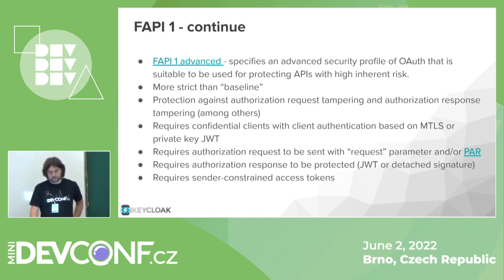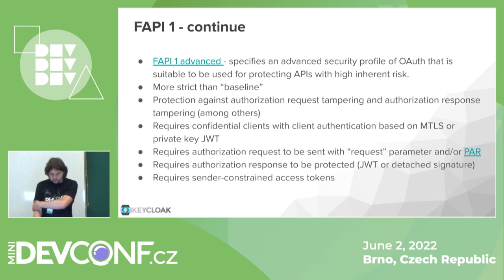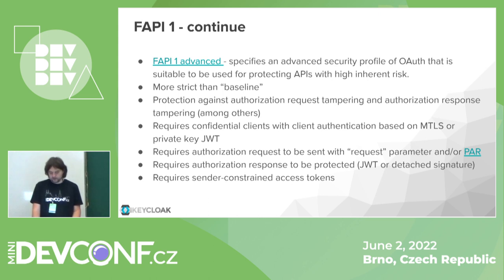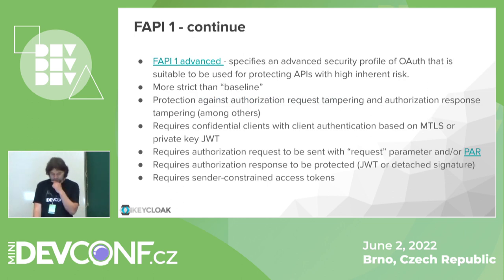FAPI advanced is targeted for client applications with high security requirements. It has even stricter requirements: the authorization request needs to be signed, the authorization response needs to be protected against tampering, and it requires sender-constrained access tokens, meaning that when client applications communicate with Keycloak they use mutual TLS and tokens sent to the user include a hash based on the certificate sent by the client.